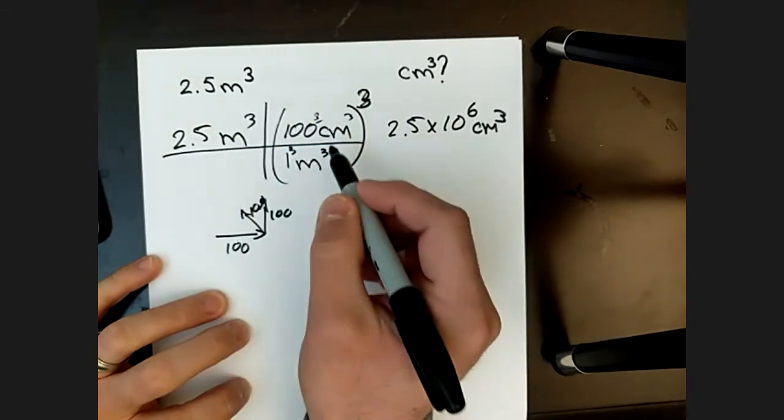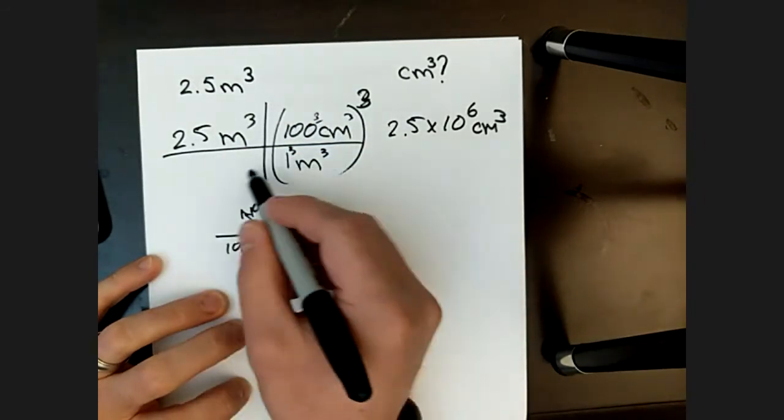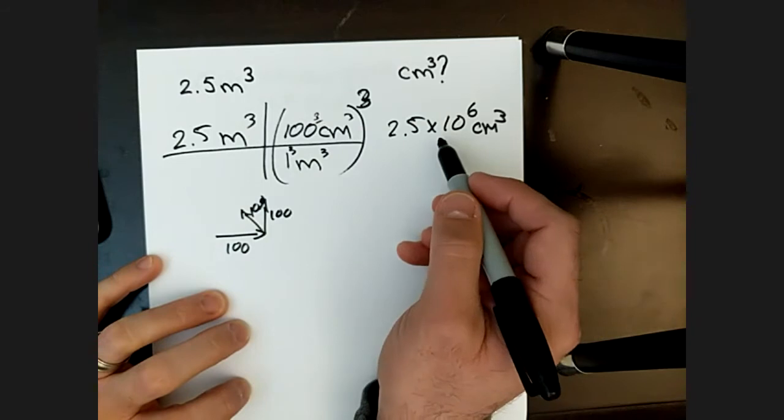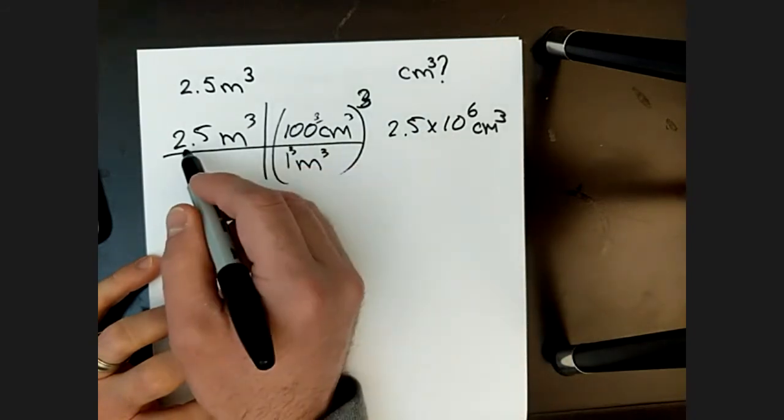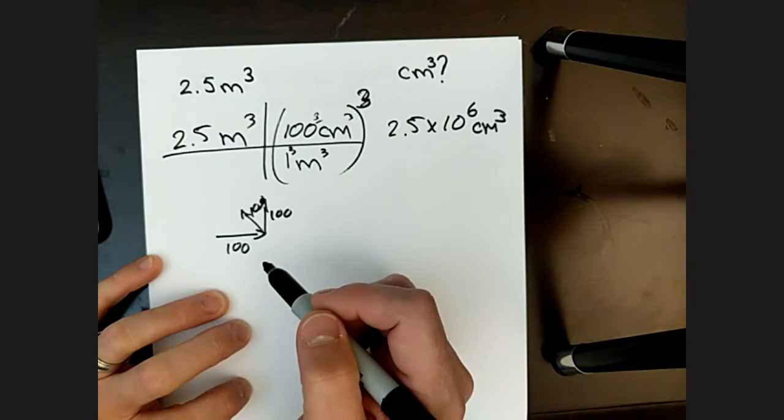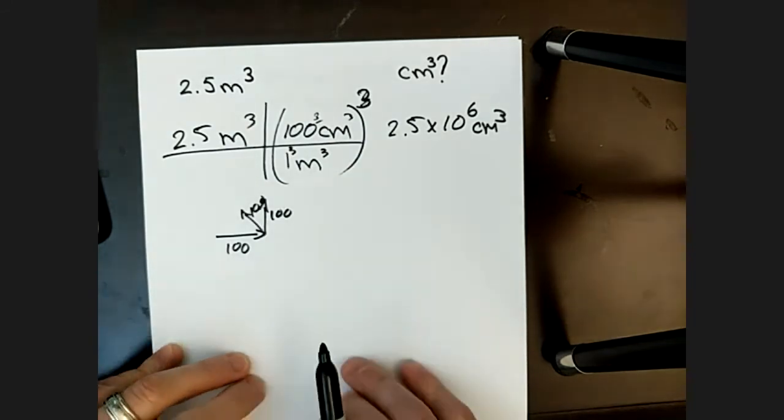And then multiply the units on the top, divide by everything on the bottom. In this case, it's just ones. So it just becomes the 10 cubed or a hundred cubed times 2.5.